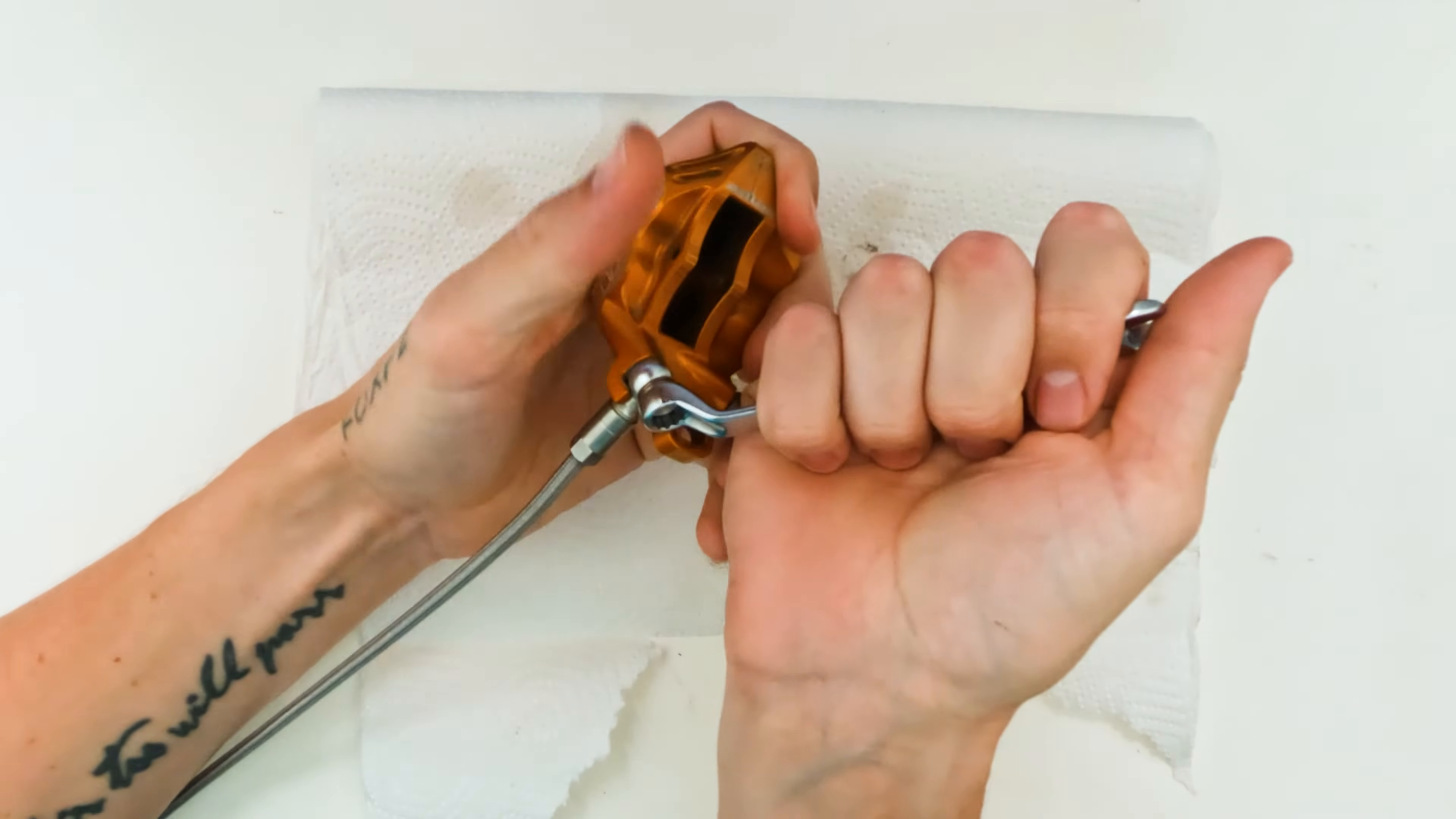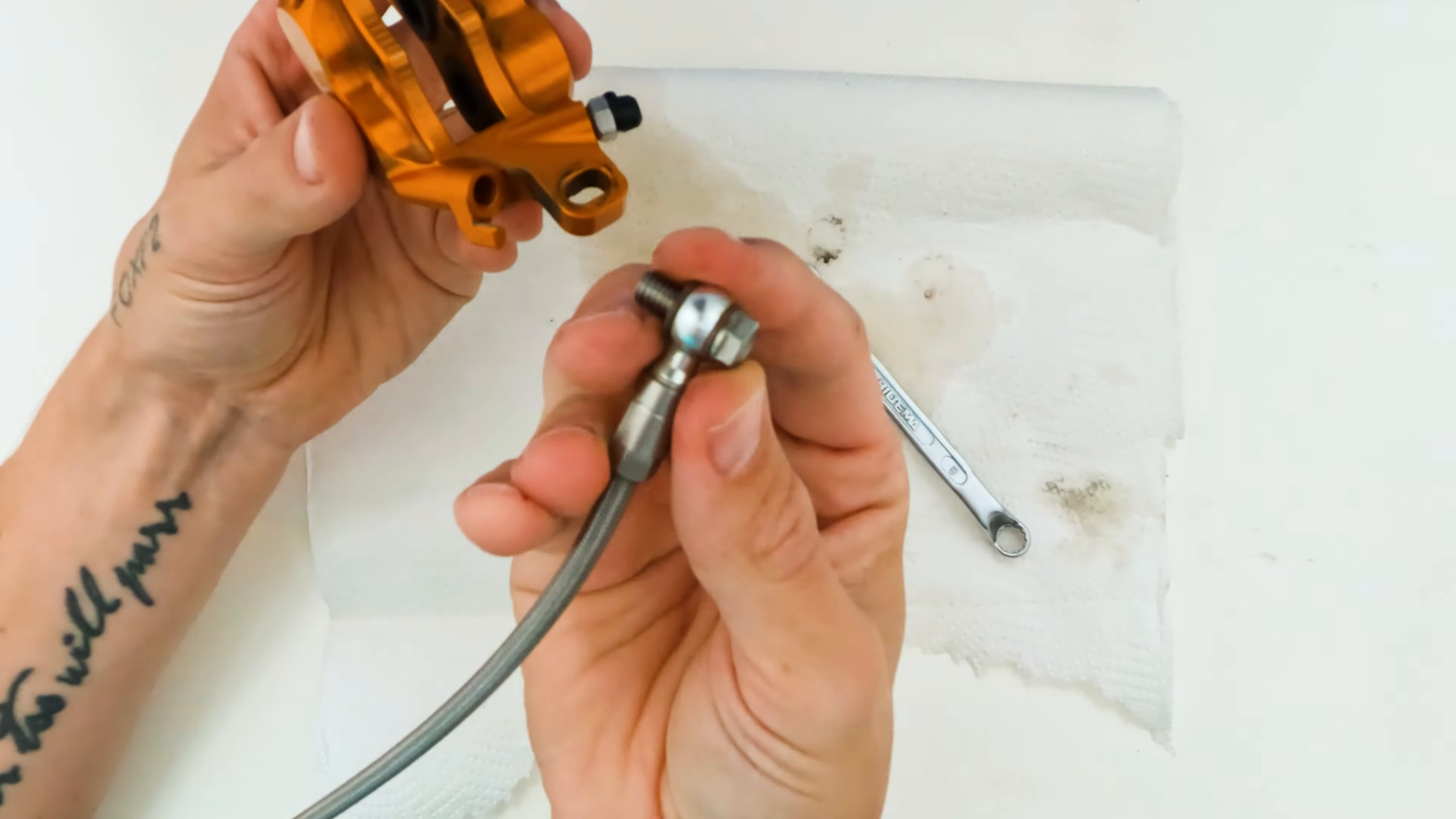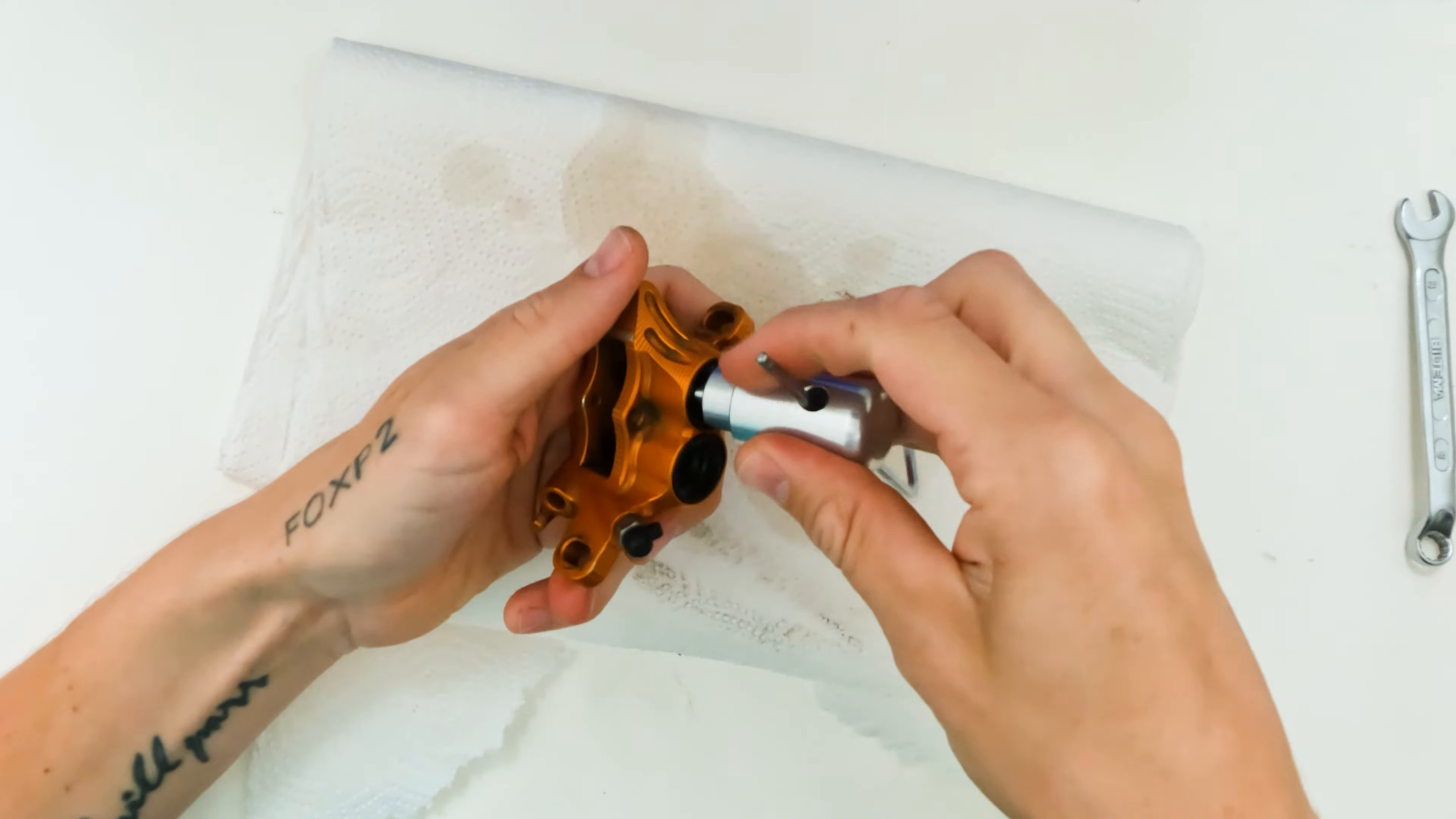I'm using the size eight. There we go. And here's a tip: just keep track of the order of things that you're removing. So this needs some leverage. There we go.